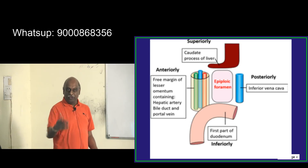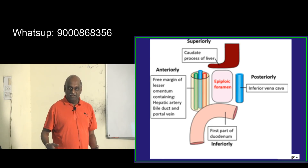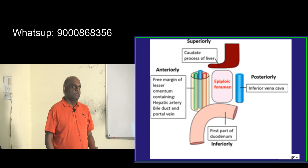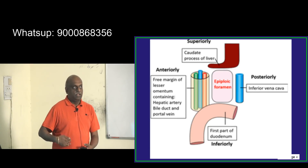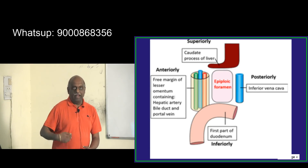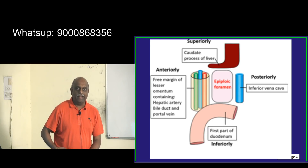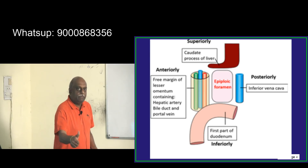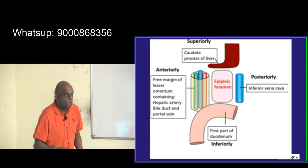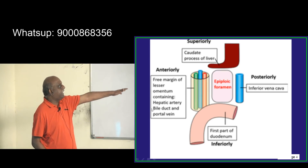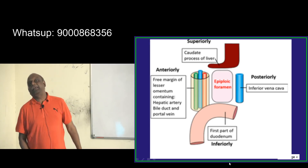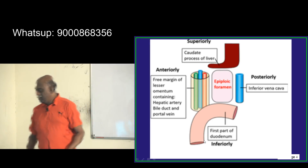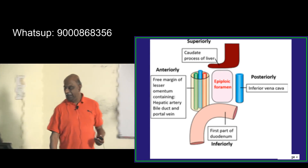Tomorrow some of you are going to be eminent surgeons. When you are operating on the liver and associated areas, you will apply pressure on the area of the epiploic foramen to protect from injury to the hepatic artery, bile duct, and portal vein while you are operating. This is called the Pringle's maneuver.